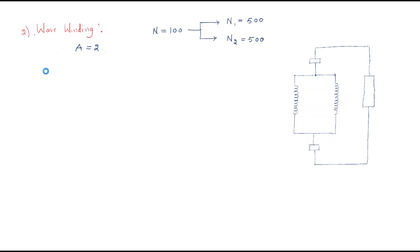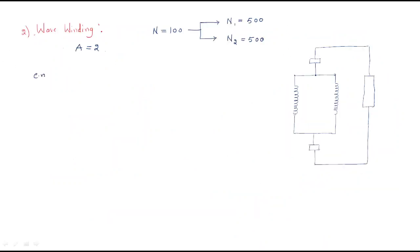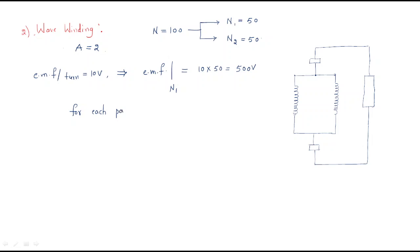EMF per turn is 10 ohms, so for each parallel path the EMF is 10 × 50 = 500 volts. Therefore, for each parallel path the generated EMF equals 500 volts.